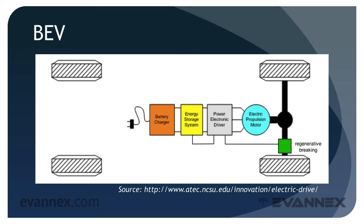A regenerative braking component, in green, translates kinetic energy from the car's motion into electricity to return energy back to the battery. Regen, as it's called, is invoked only when power to the electric motor is discontinued — this occurs when the driver takes his or her foot off the accelerator. The most notable BEVs are the Nissan Leaf, the Tesla Model S, the Ford Focus Electric, the BMW i3 without range extender, and the Mitsubishi EV, with others such as the Volkswagen e-Golf in their first year of introduction, and still more on the way.